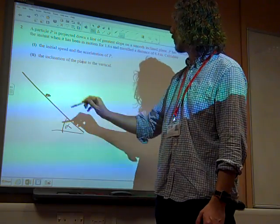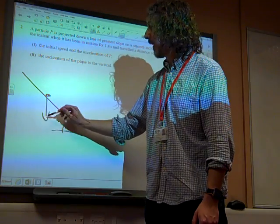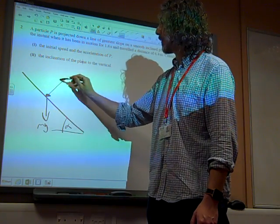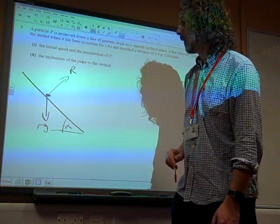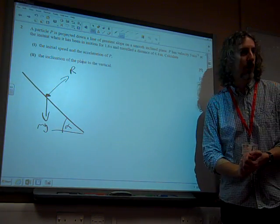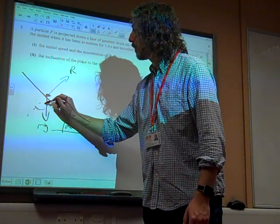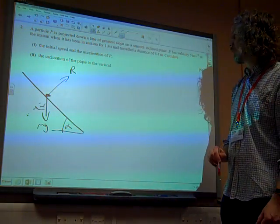Here's the particle travelling down this slope. There it is, there's Mg. There's the reaction. It's a smooth inclined plane, so we've no frictional force on there. That would be the angle there.